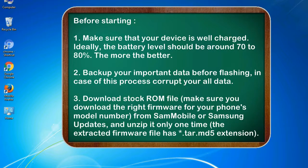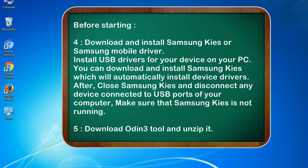Before starting: 1. Make sure that your device is well charged — ideally the battery level should be around 70 to 80%, the more the better. 2. Back up your important data before flashing, in case this process corrupts your old data. 3. Download the stock ROM file — make sure you download the right firmware for your phone's model number. From Sammobile or Samsung updates, unzip it only one time. The extracted firmware file has a .tar.md5 extension.